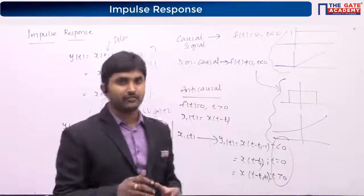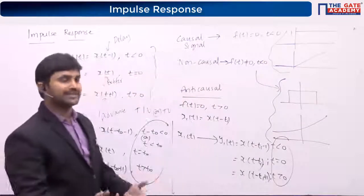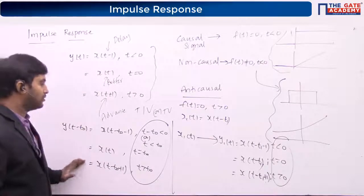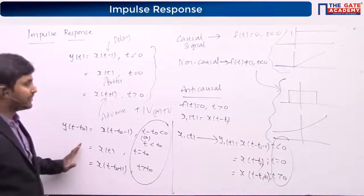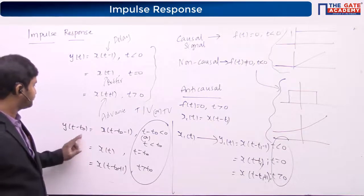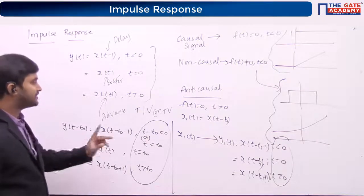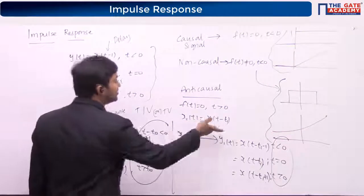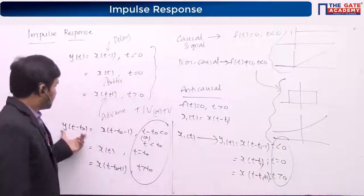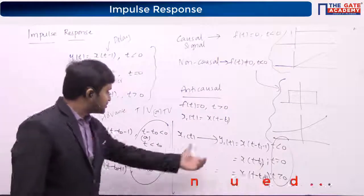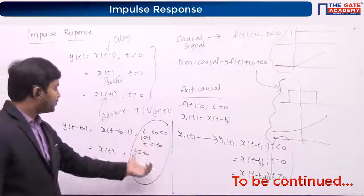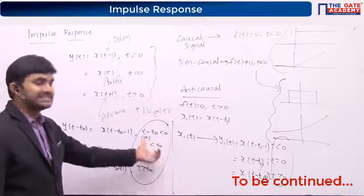If you want a mathematical background for it, this is the mathematical background: you are finding y(t−t₁) and comparing it with y₁(t). Those two appear to be the same, but if you examine the condition on the instant, you find a different boundary — which confirms the system is time variant.